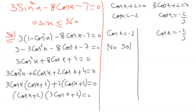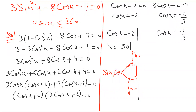Why no solution? Let me introduce a new concept. For both sine and cosine, the highest value is plus one and the lowest value is minus one. So answers stay in this range. Above plus one — no solution. Below minus one — no solution. So the value of cosine x must be between minus one and plus one.